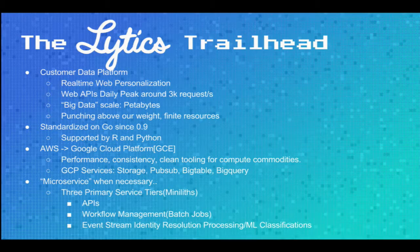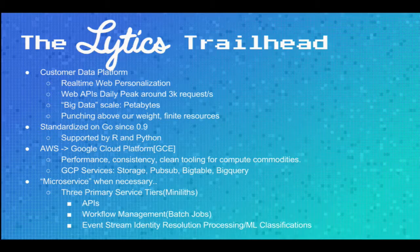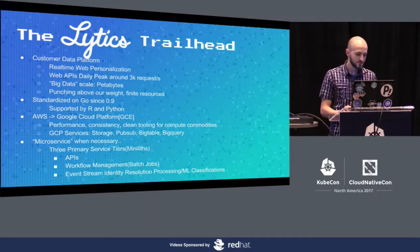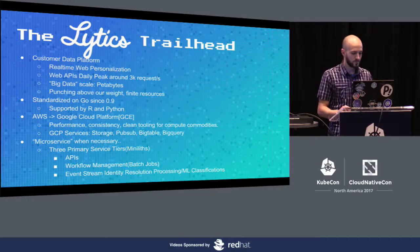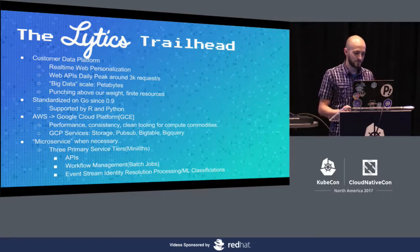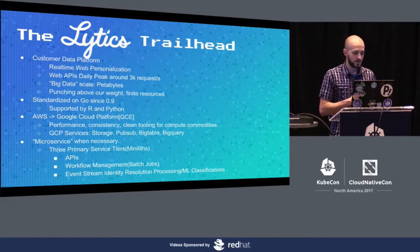We were standardized on Go since version 0.9, so we've been a Go shop for a long time, with a little bit of R and Python to support. Originally we were on AWS and moved to Google Cloud Platform because of stability and performance. We started adopting a lot of their technologies to replace things like Kafka with PubSub, and Cassandra with BigTable. As far as the spectrum of monolith versus microservices, we're kind of in the middle — we have an API tier, a workflow management tier called Metaphora, an event stream, and a stream processing system that does entity resolution and machine learning classification in real time.